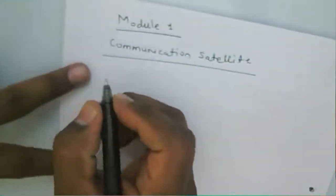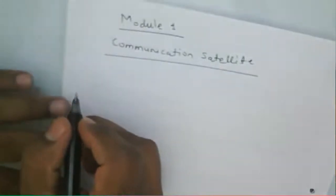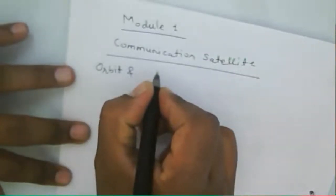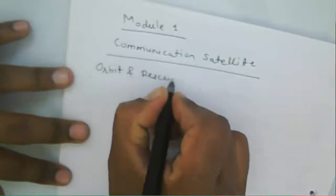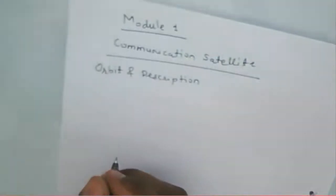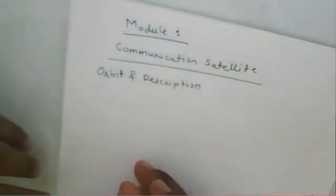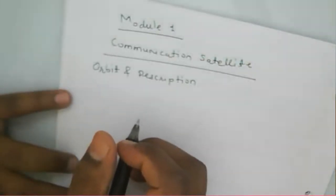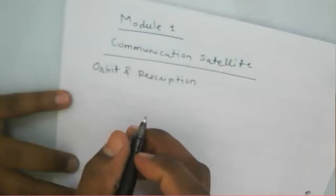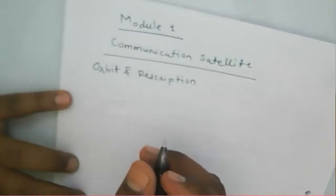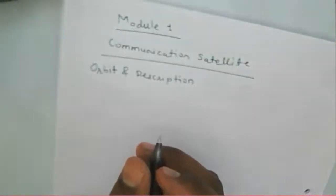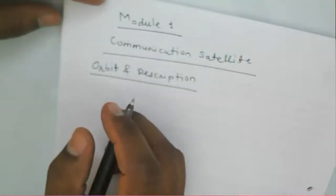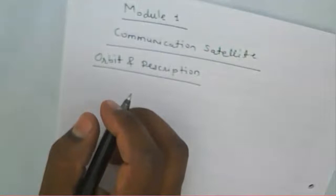We will learn Module 1 on communication satellites. Here we learn what the various orbits are and their descriptions. An orbit means how a satellite rotates around the Earth. We will also learn some principles for satellite rotations in detail. First, we cover the various orbits and then a brief history of satellite communication.